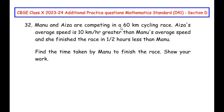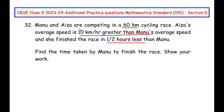Manu and Aiza are competing in a 60 km cycling race. Aiza's average speed is 10 km per hour greater than Manu's average speed, and she finished the race half an hour less than Manu. We have to find the time taken by Manu to finish the race. Since Aiza is going at a higher speed, she finishes earlier — for example, if Manu took 2 hours, Aiza completed it in 1.5 hours, which is half an hour earlier.